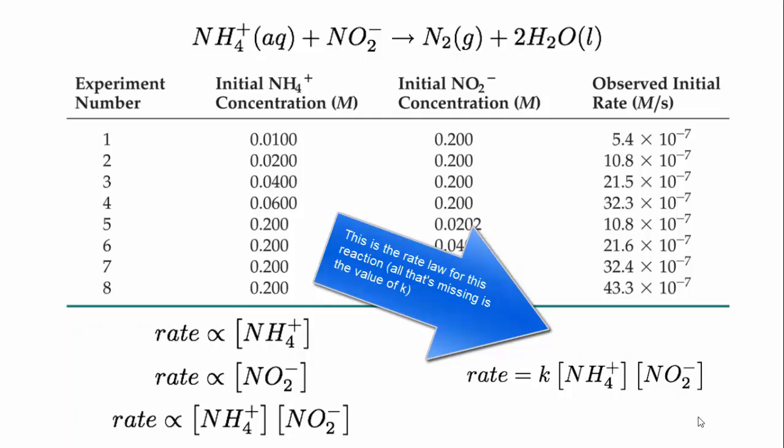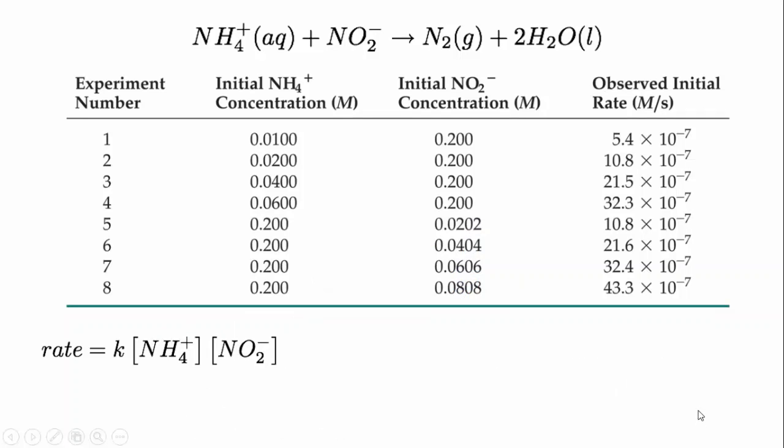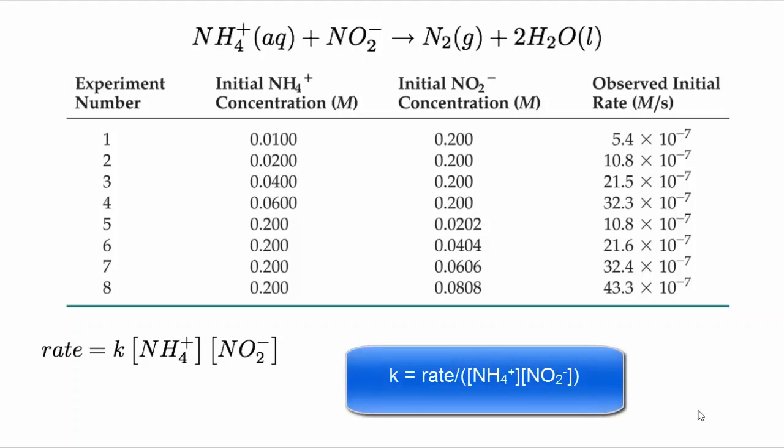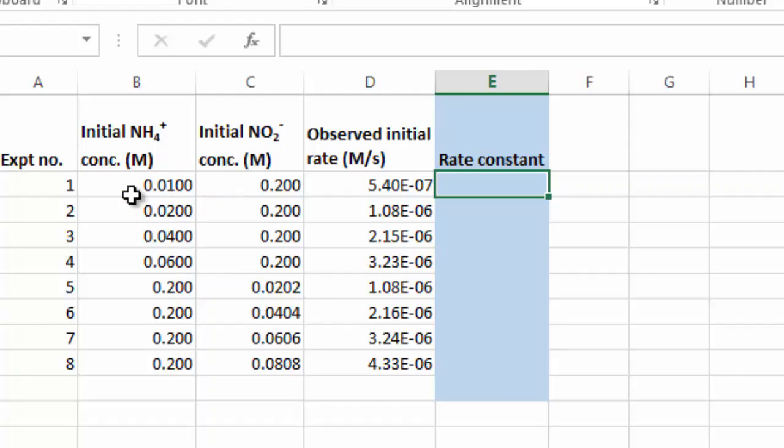So, how do we find out the value of the rate constant? Well, we've got our rate law here. Rate equals K times the concentration of ammonium times the concentration of nitrite. So we can rearrange that equation to make K the subject. That would give us K equals the rate over the concentration of ammonium times the concentration of nitrite. And we have values for those three variables. We've got the rate, we've got the ammonium, and we've got nitrite. So we can just plug those in and that will give us a value for K.